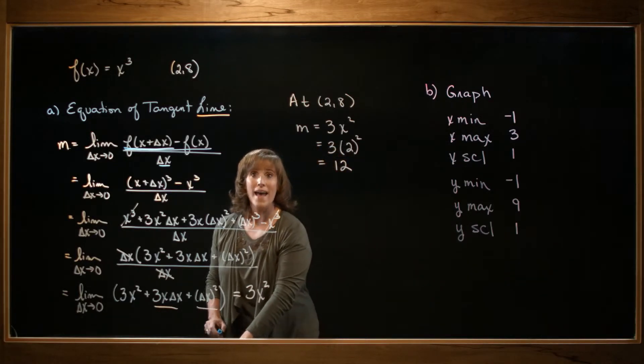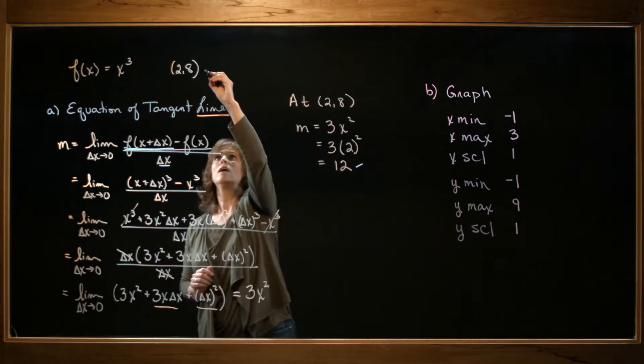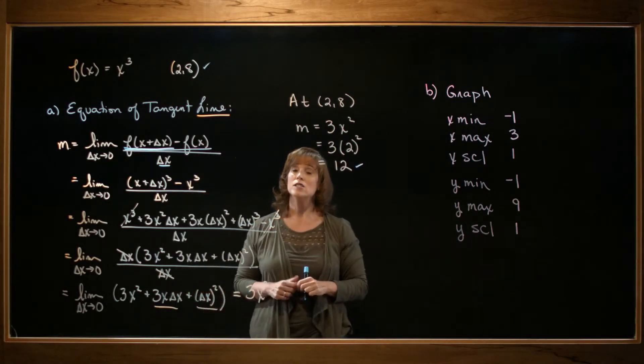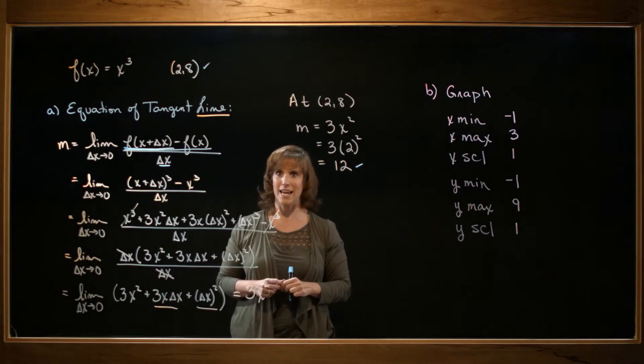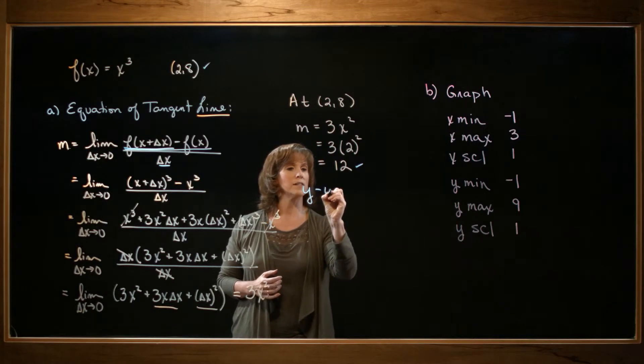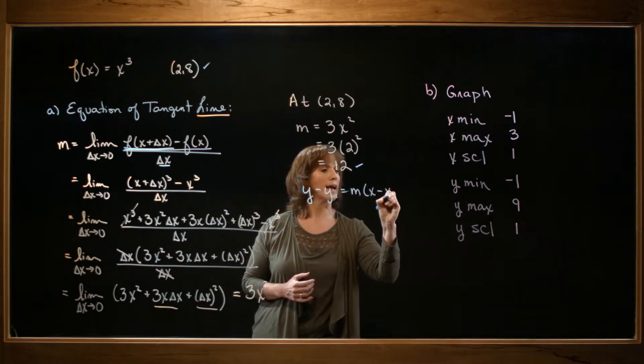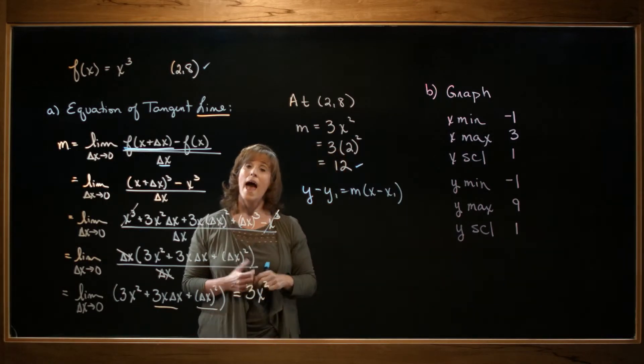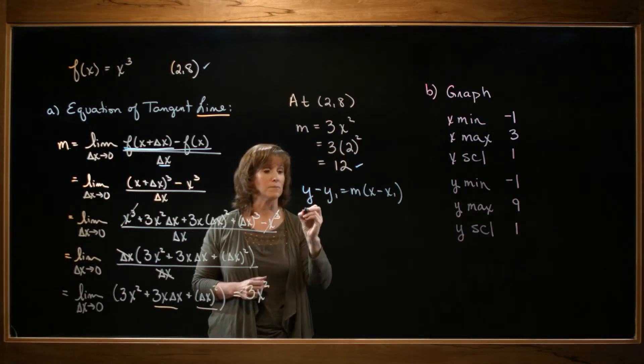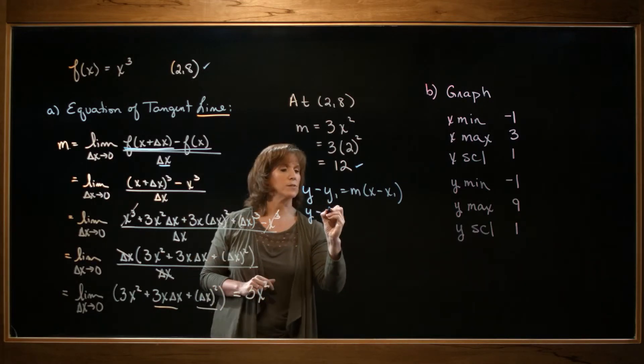Now I have the slope of my tangent line and one point on my line. So I can go ahead and get the equation of the tangent line. I'm going to use the point slope formula for that. So I have y minus y1 equals m times the quantity x minus x1. And I'll plug in the appropriate information. The y coordinate of my given point is 8. So I'll plug in an 8.